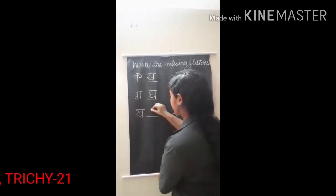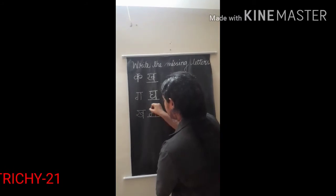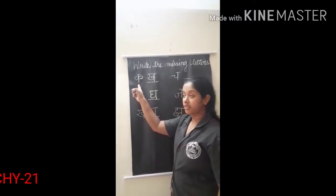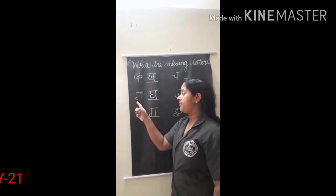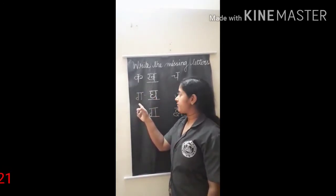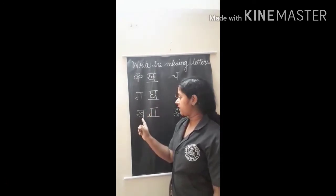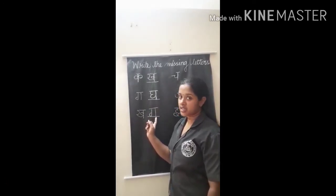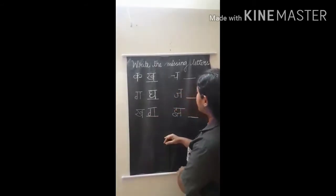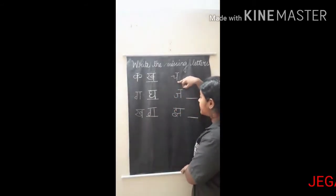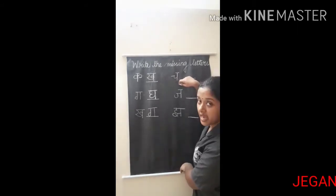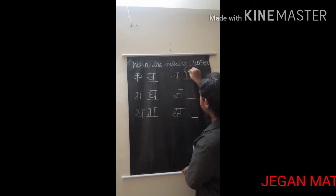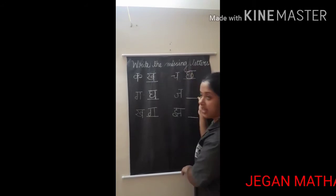Similarly, the answer for each one follows the same pattern. After each Vyanjan, we write the next Vyanjan in sequence. After KA comes KHA, after KHA comes GA, continuing through the consonant order.